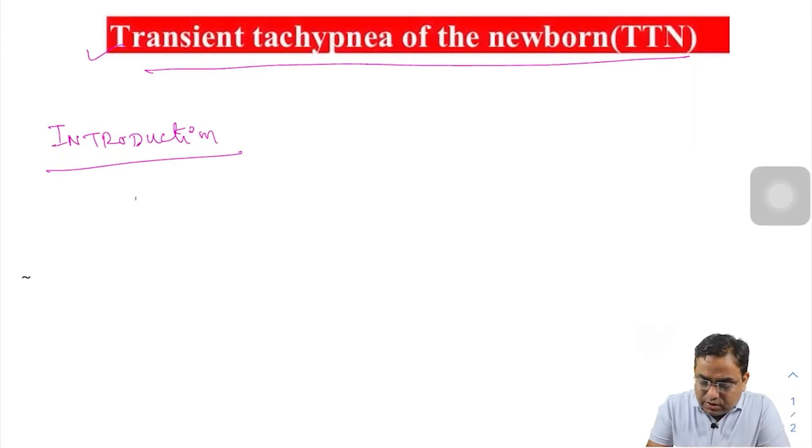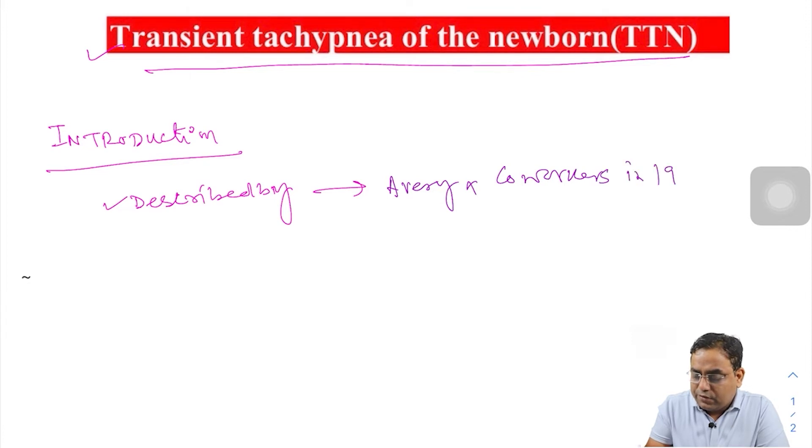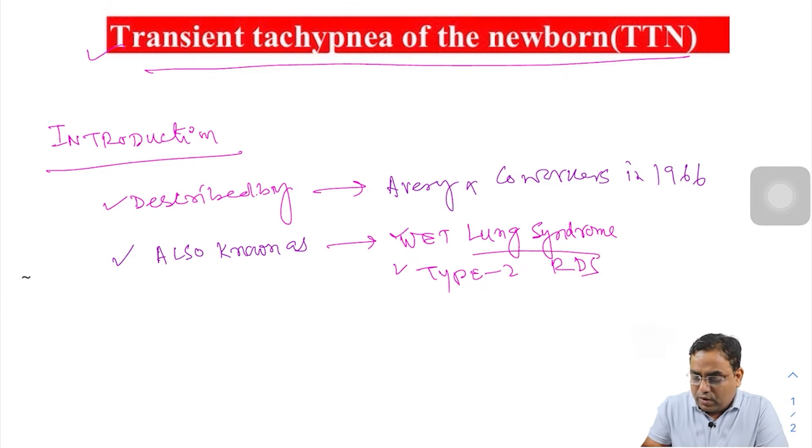It was first described by Avery and co-workers in 1966, also known as wet lung syndrome or type 2 respiratory distress syndrome, type 2 RDS.